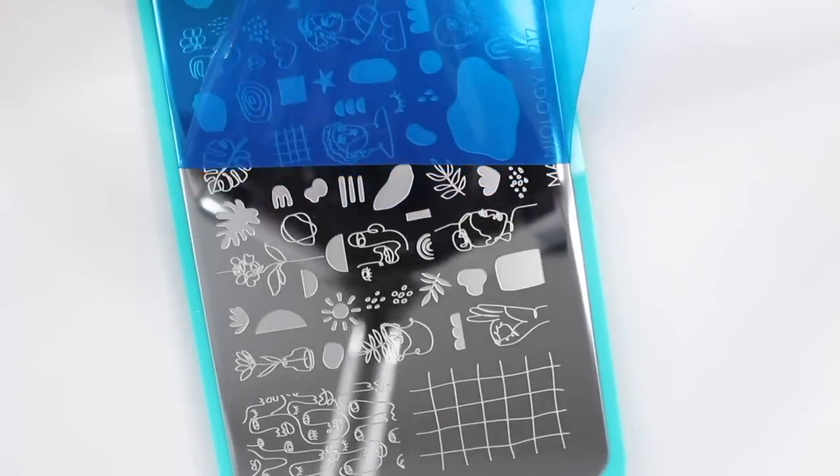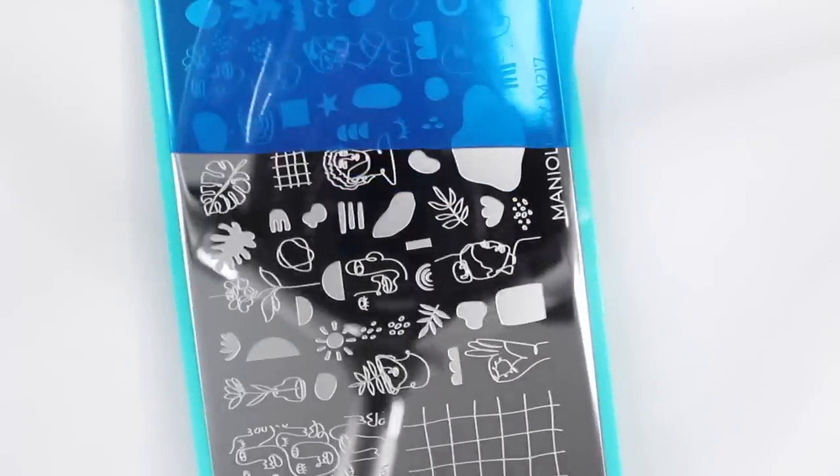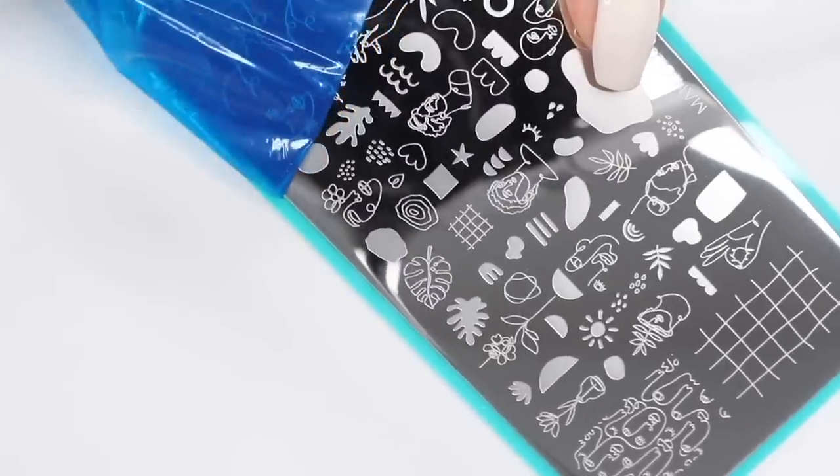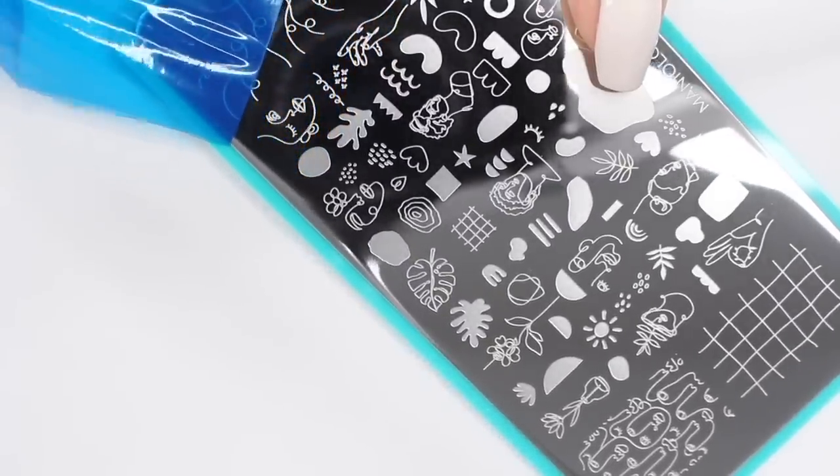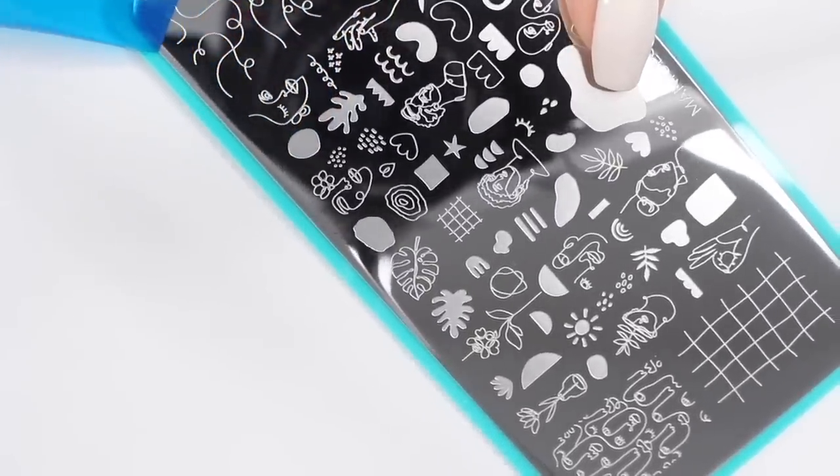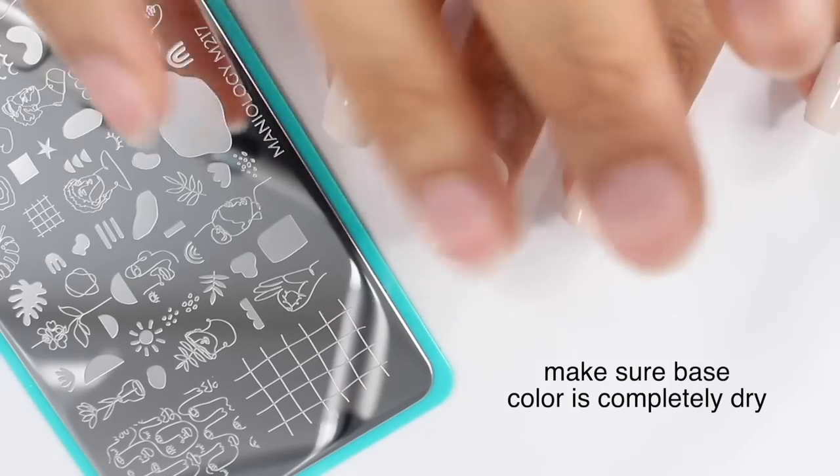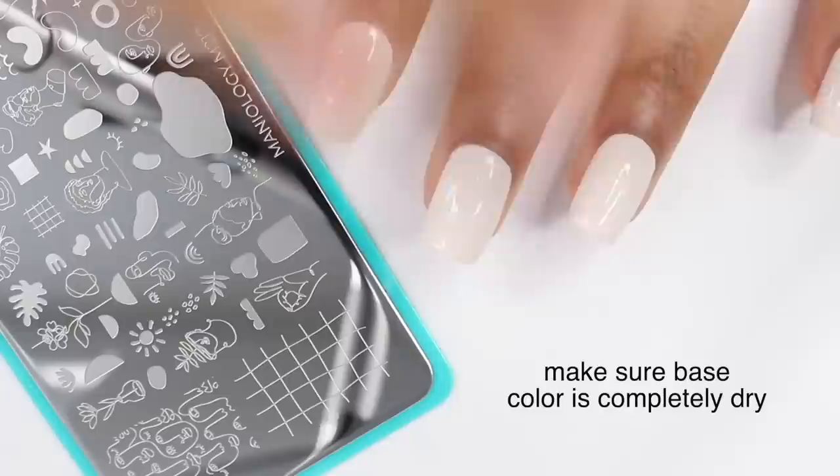So I was really excited to try it out. And going into this, I had the basic understanding of stamping where you put the polish on, you scrape it, you put the stamper on top, and then you put it on your nail. But that's pretty much all I knew, so we're just going to get right into the stamping.